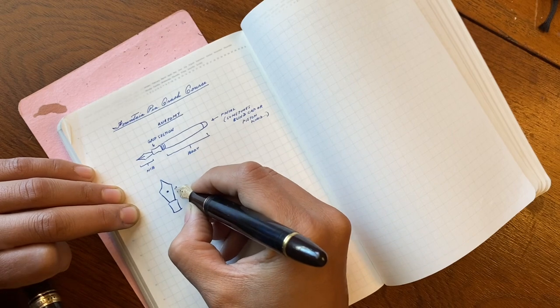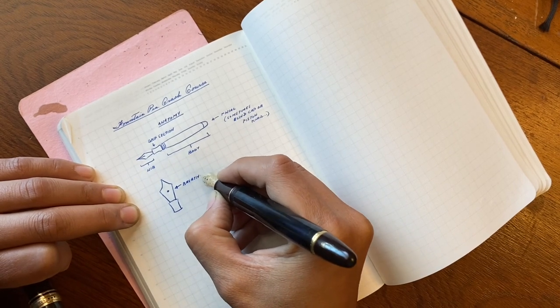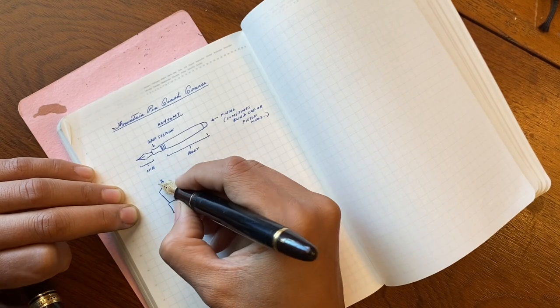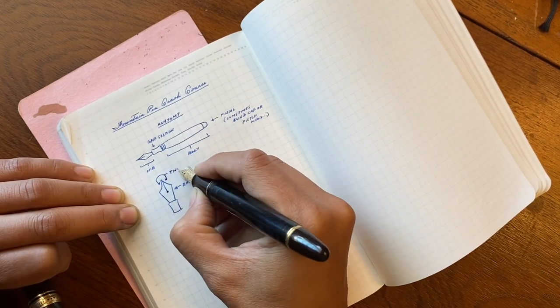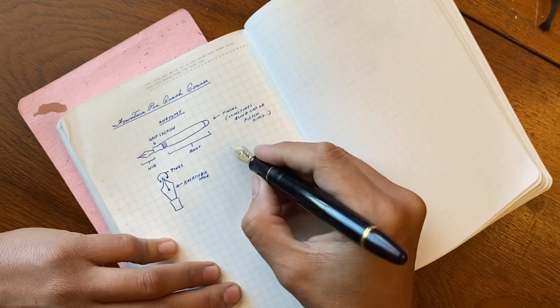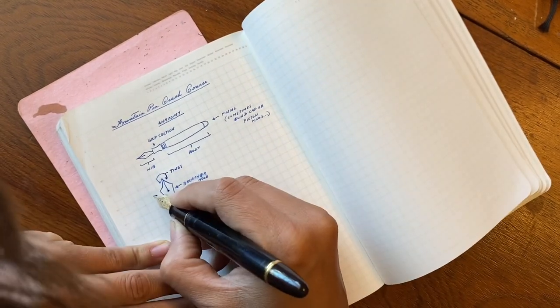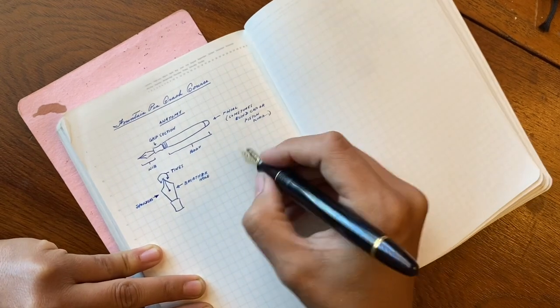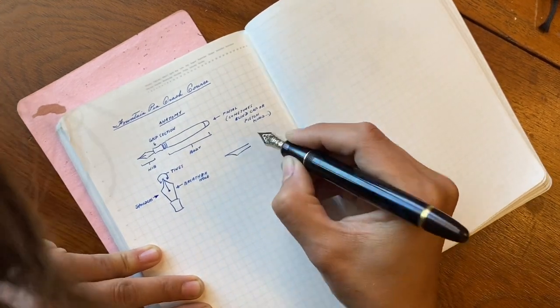Taking a closer look at the nib, we have what is called the breather hole, and then there's a line that divides the nib running down to the breather hole and creates two tines. On some nibs there's actually three tines, and there's even a nib like the Pilot Parallel pen that only has one tine.